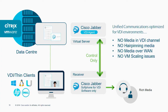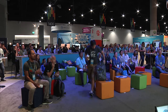So we've actually taken the covers off slightly here. We're in the data center. We have Cisco Jabber running up there. We add an extra component, which is our VDI agent, and that is what sends the signaling down to the VDI thin client.